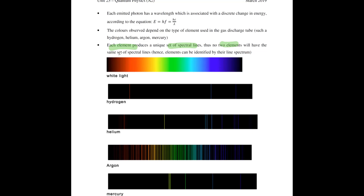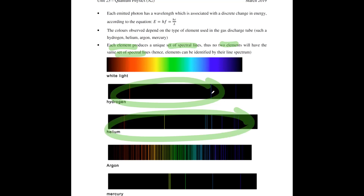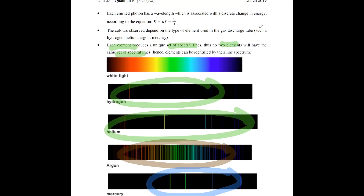No two elements will give you the same set of spectral lines. If it's hydrogen, it will always give you this particular pattern. If it's helium, it's always going to give you this. If it is argon, it will always give you this, and if it's mercury, it's always going to give you that. Different elements will never give you the same set of lines as another element, so you can actually identify certain elements just by looking at the line spectrum you get.